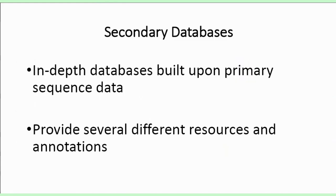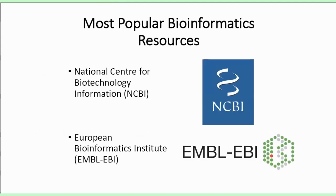Another type of database is the secondary database, in which information is built upon the primary sequence data. An example of a secondary database is one that contains annotation for a particular sequence. Two of the most popular bioinformatics resources are the National Center for Biotechnology Information, or NCBI, in the United States, and the European Bioinformatics Institute, or EMBL-EBI, in the UK.